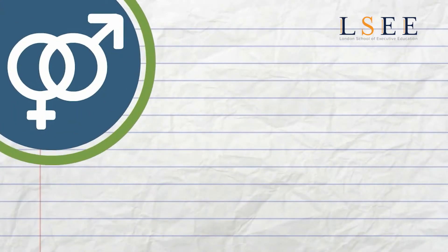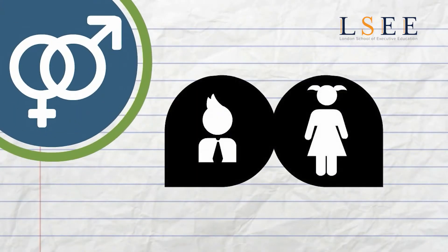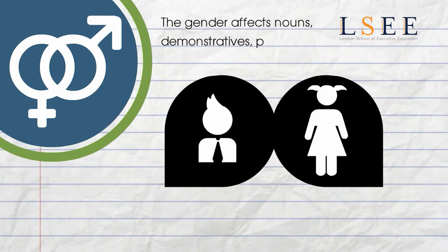Gender. Spanish has masculine and feminine genders. The gender affects nouns, demonstratives, possessives, and articles, but not verbs.